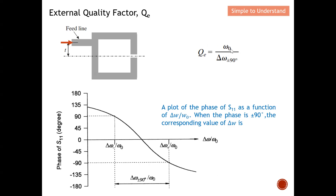We just need the phase of S11. The formula uses the center frequency of the bandpass filter, which corresponds to the frequencies at +90° and −90° phase. The difference between the +90° and −90° frequencies gives the value needed to compute the external quality factor Qe. You can easily plot this in a simulator such as ADS to obtain the phase of S11 as a function of frequency.